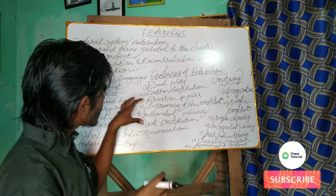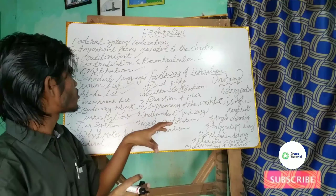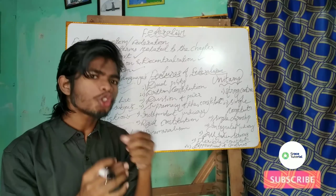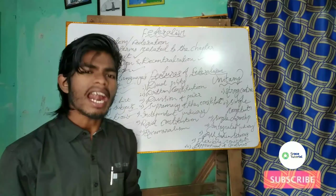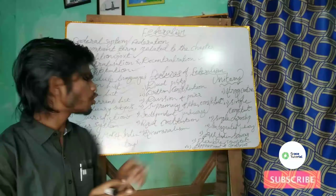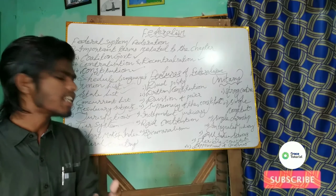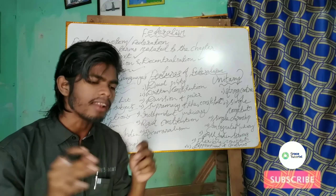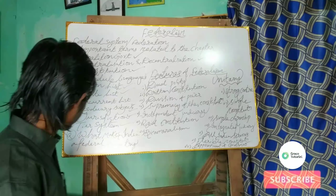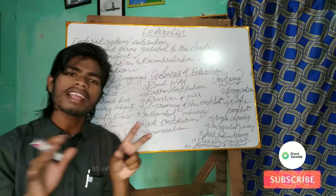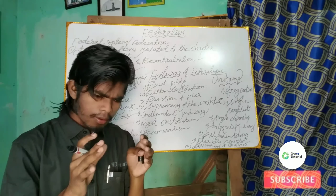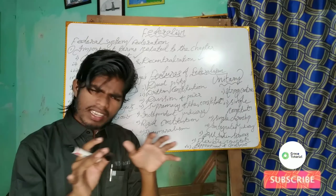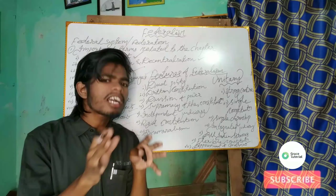These terms are very much essential as they may appear as bits in your examination. I'm very sure if any question comes related to union list, state list, concurrent list, jurisdiction, tier system, scheduled languages, or constitution, you are going to do well. Now let us move on to the next part — what makes India a federal country? Before that, let me tell you what is meant by the federal system.